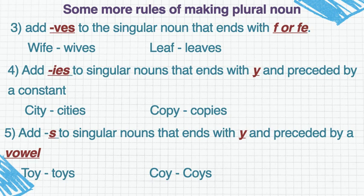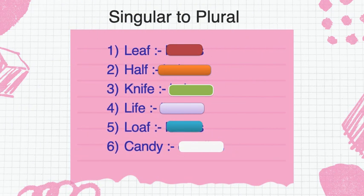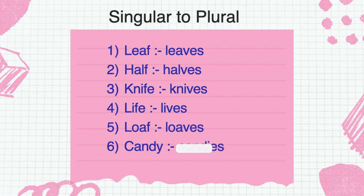So these were the rules for making a singular noun plural. Now let's see some examples. Leaf — leaves. Half — halves. Knife — knives. Life — lives. Loaf — loaves. Candy — candies.